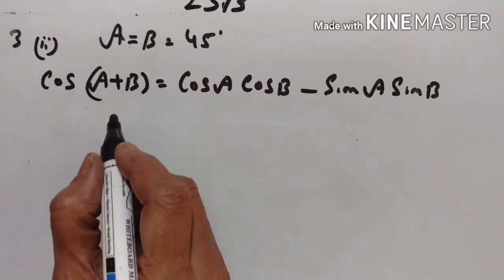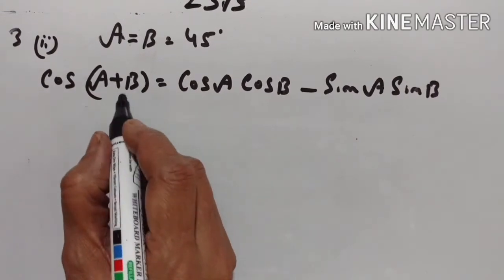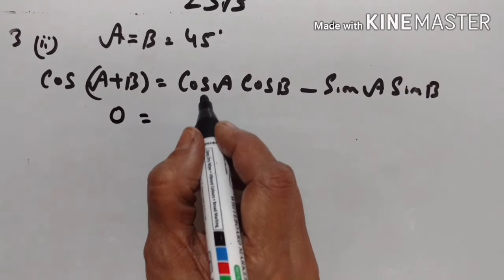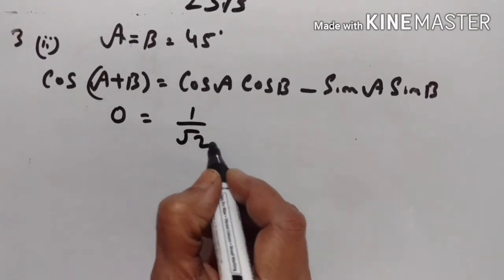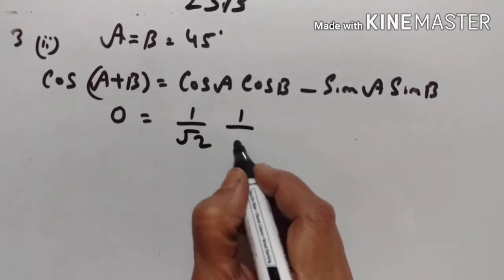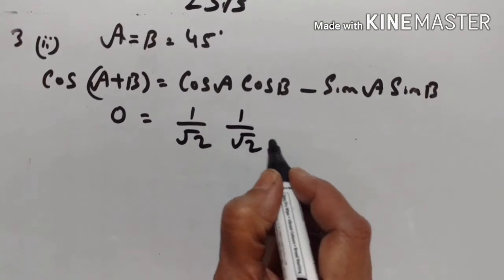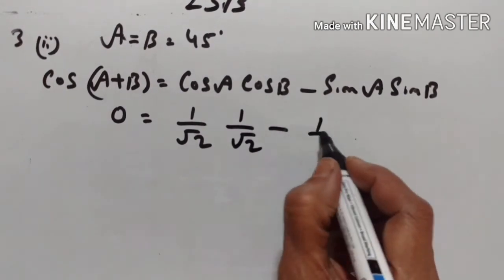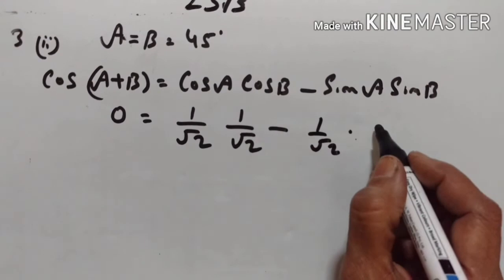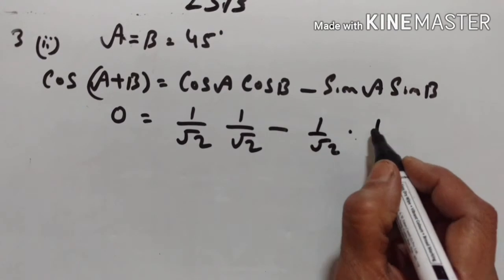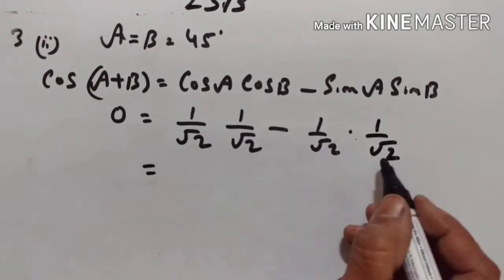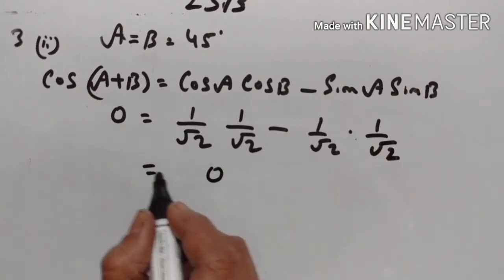Cos of 45 plus 45 equals cos of 90, which is equal to 0. Cos 45 is equal to 1 upon square root of 2, and sin 45 is equal to 1 upon square root of 2. So this is also 0. LHS is equal to RHS.